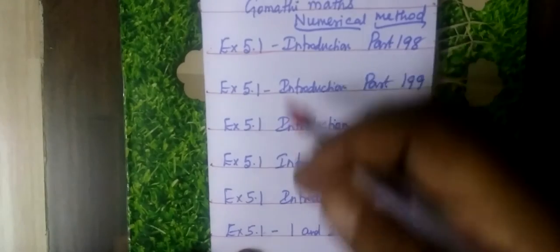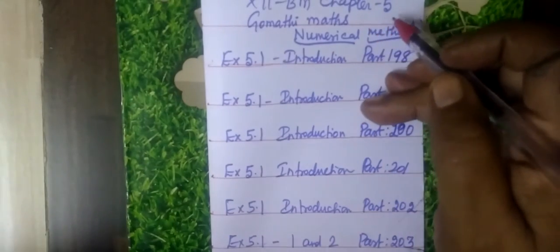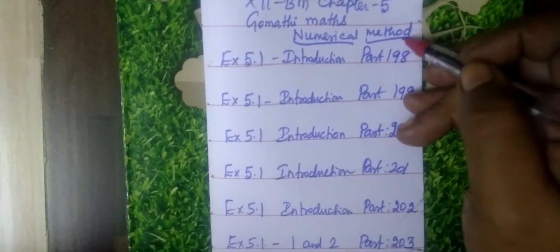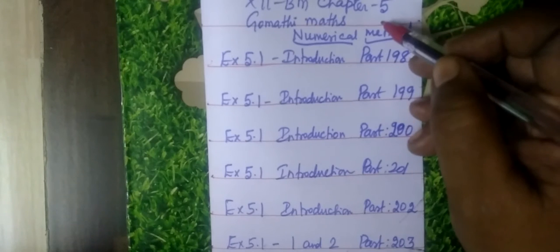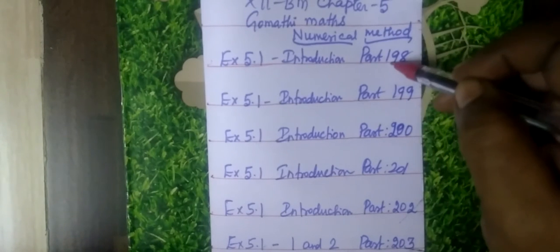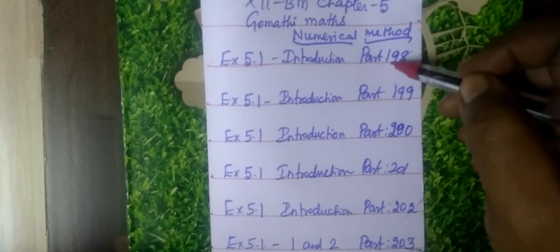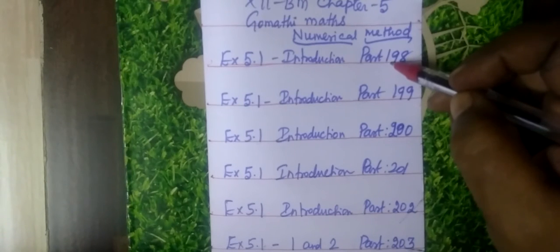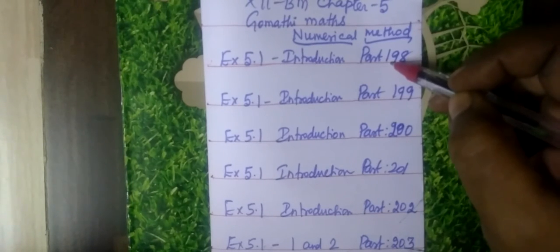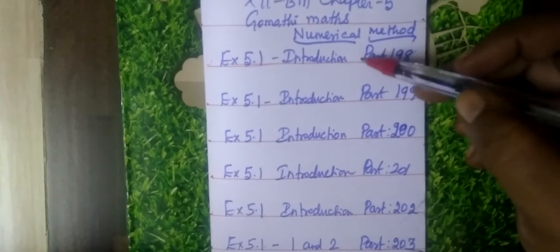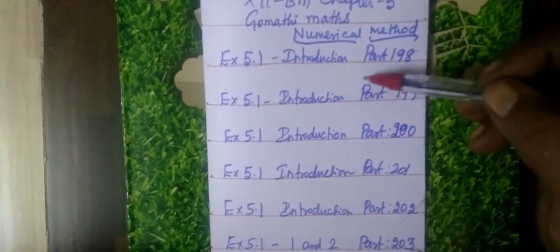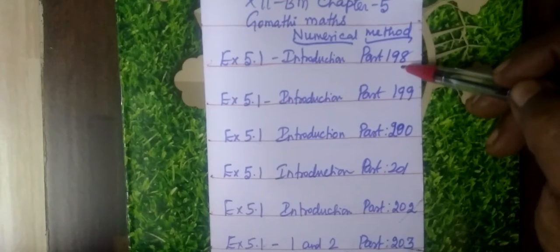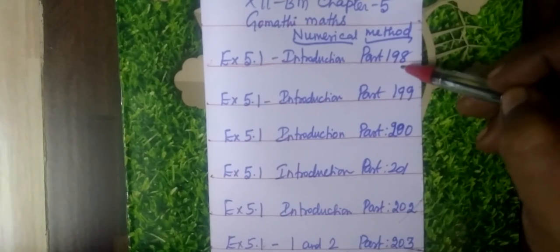Good evening to all, and good day to you. This is Business Math Chapter 5, Numerical Methods. You can see the videos in the Guamadi Mag channel, Exercise 5.1. You can see the links in the description box. If you have any part number, you can see the question number correctly. This is just for your reference — link in description box.